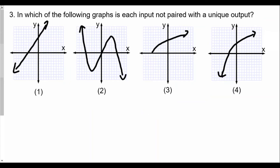Number three: which of the following graphs is each input not paired with a unique output? When we look at the wording, it's pretty much the same thing — each input x is not paired with a unique output y. Which one does not pass the vertical and horizontal line test? It would have to be choice two. It does not pass the horizontal line test, because we have three different values of x which have the same value of y. Therefore, there's no unique output for those inputs. The first three questions were about graphs, and you can figure this out using both the vertical and horizontal line test.